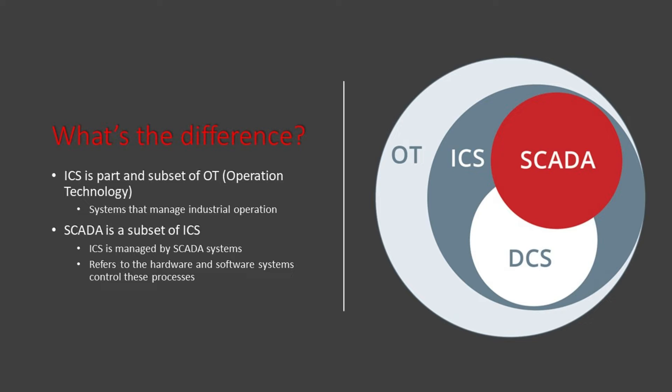You may have heard of IT, which is information technology. Well, ICS is a part of OT security — that's operation technology. These are systems that manage industrial operations, and ICS is a major subset within the OT sector, and SCADA is a subset of ICS. So SCADA is specific to ICS, as ICS is managed by SCADA systems, and refers to the hardware and software systems that organizations use to control these industrial processes. SCADA provides a graphical user interface for operations and allows for easy observation of the status of that system. Users will also receive alarms and can easily make adjustments to make sure that the processes are under control.